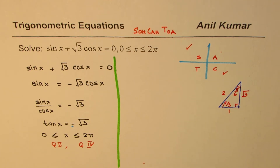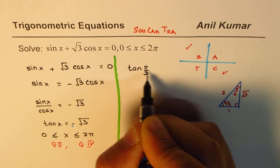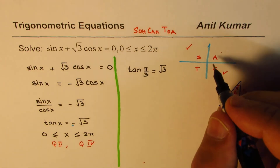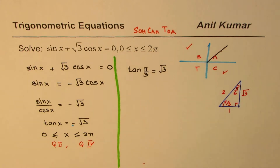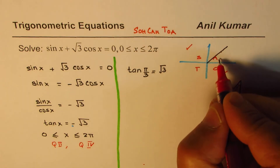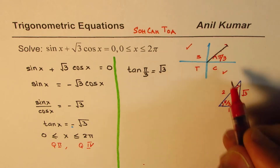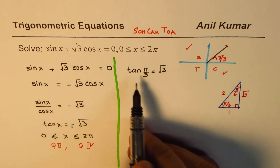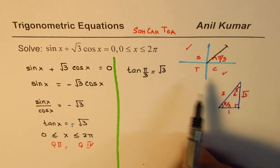So we know that tan of pi by 3 equals square root 3. Therefore the acute angle in quadrant 1 is pi by 3, and this angle gives us the magnitude square root 3. You could also use a calculator — set it to radians and find tan inverse of square root 3.